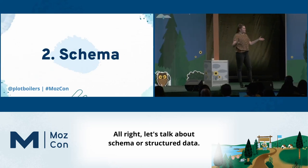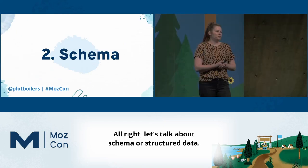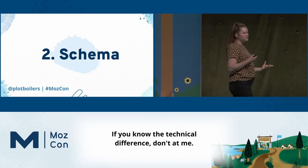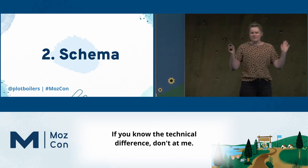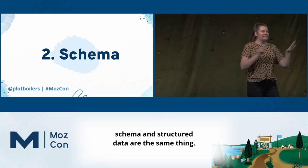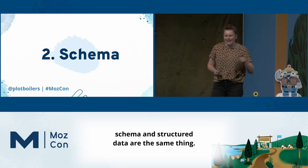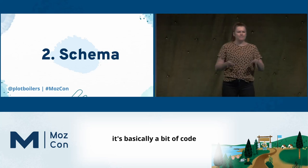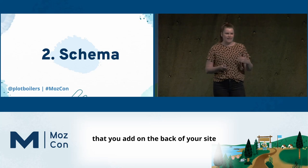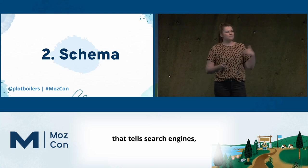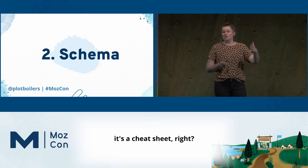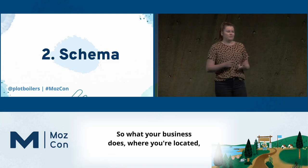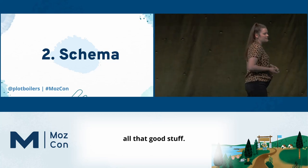Let's talk about schema, or structured data — I'm going to use those words interchangeably. Schema is basically a bit of code you add on the back of your site that tells search engines — it's a cheat sheet — what the website is talking about: what your business does, where you're located, all that good stuff. It's important because it gives your content context and specificity. Context tells search engines how all of the things make up the larger entity of your business.